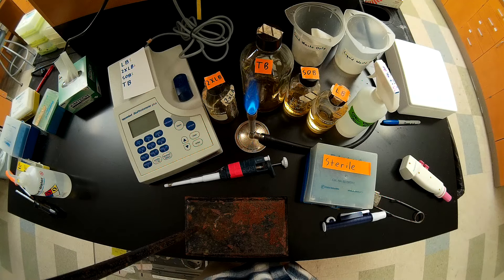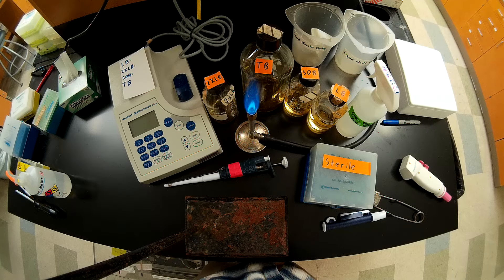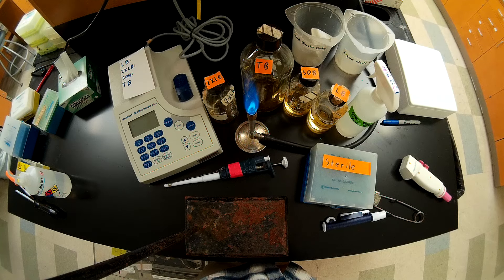In this video, we're going to learn how to determine the OD600 of a sample. OD600 stands for the optical density at 600 nanometers of a sample.